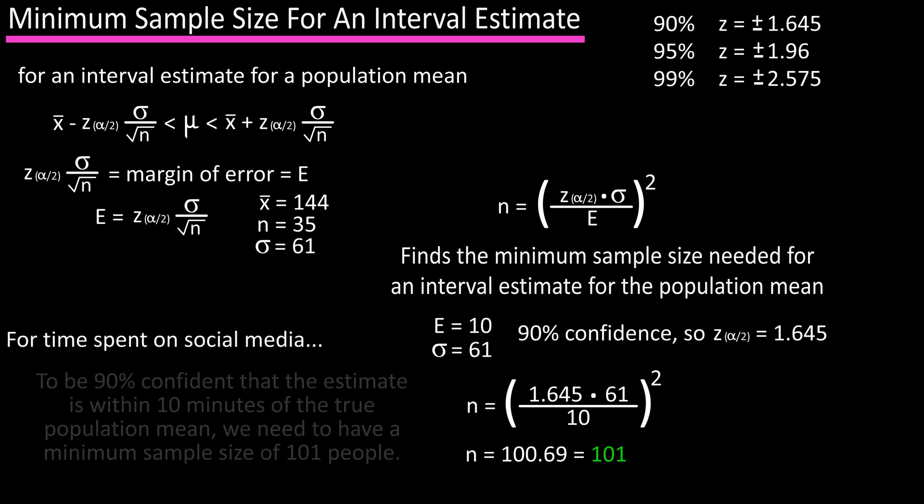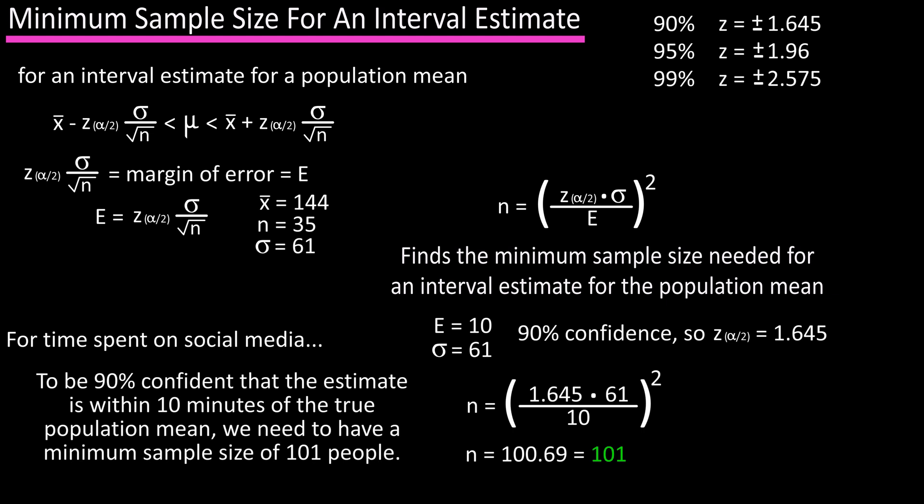So we would say to be 90% confident that the estimate is within 10 minutes of the true population mean, we need to have a minimum sample size of 101 people.